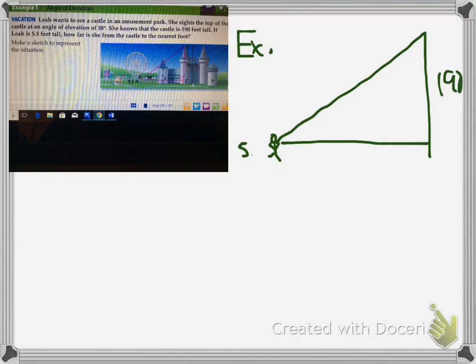She is 5.5 feet tall. So even though we know the castle is 190 feet, there is a little gap here, as you can see in my drawing, that accounts for her being 5.5 feet tall. Because we're talking about from her line of sight, from her eyes, she's got the 38 degree angle. So you need to subtract that first and find out what we're working with here is 184.5 feet.